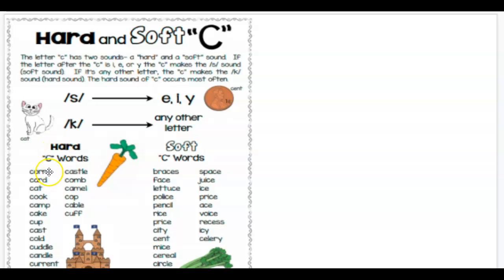We have our hard C words, like corn, card, cat, cake, cup. Those are the K-K-K sound.